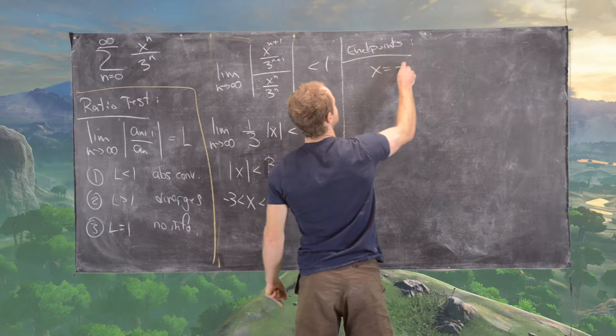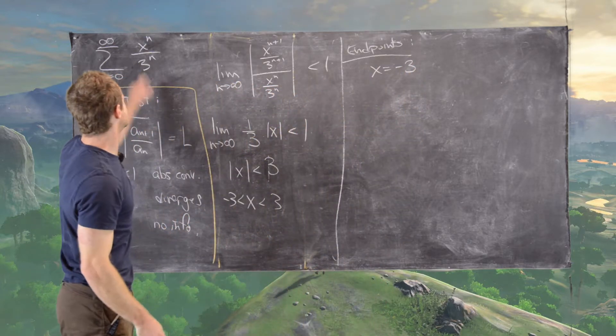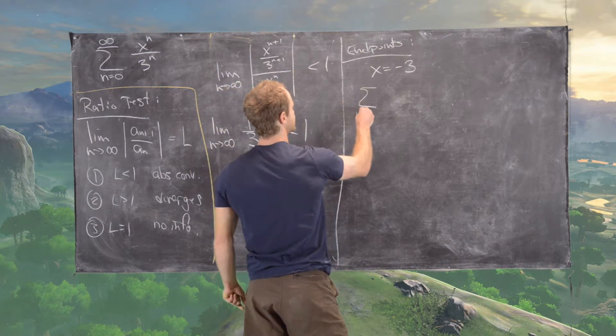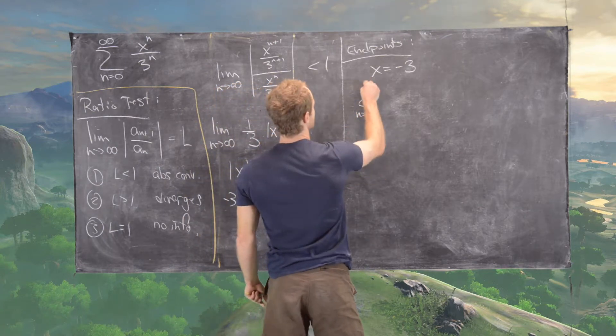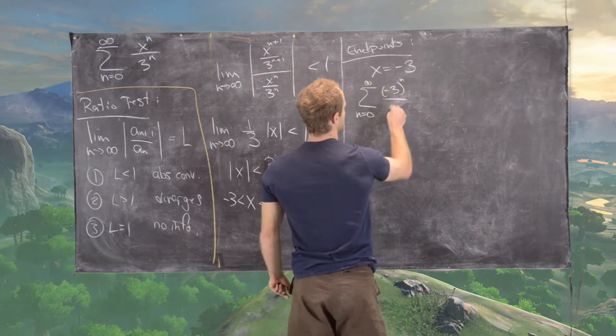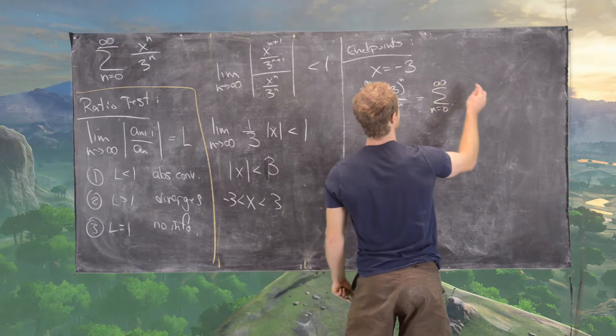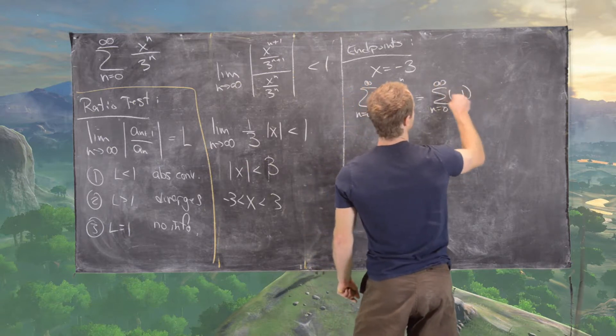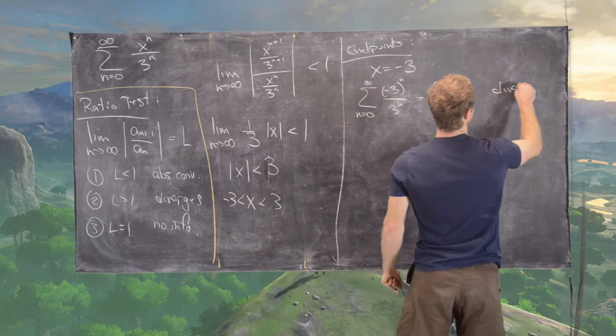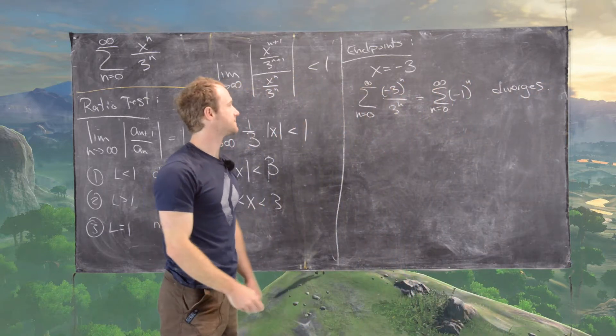So let's look at x equals negative 3 first. So if we plug x equals negative 3 into this series, we get the sum n equals 0 to infinity of negative 3 to the n over 3 to the n, which is the sum n equals 0 to infinity of minus 1 to the n, which diverges by the test for divergence. Good.